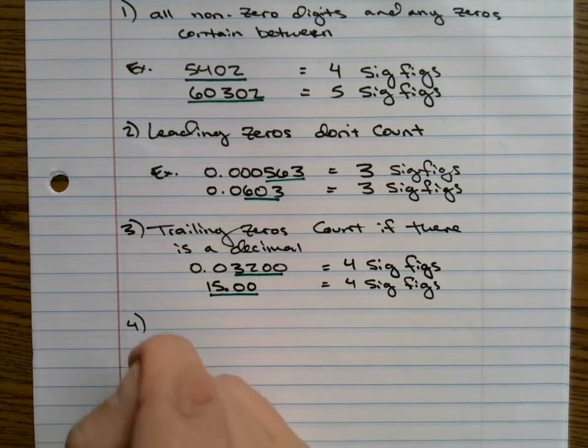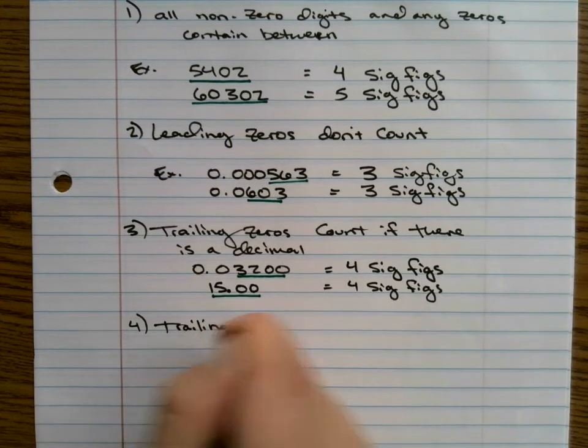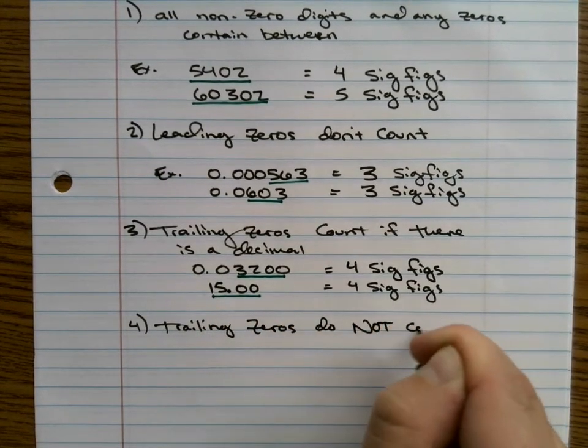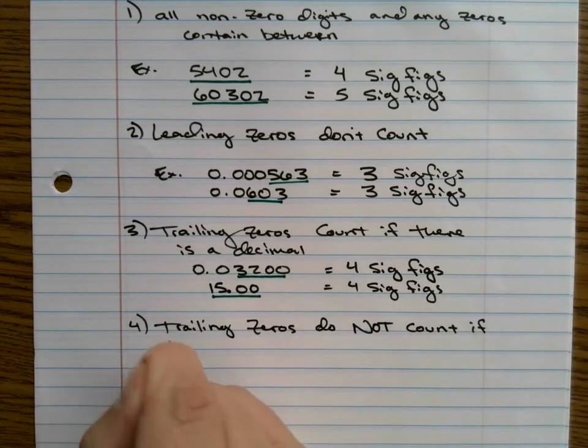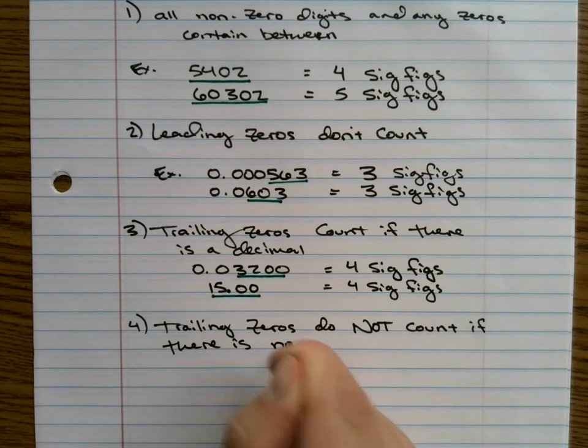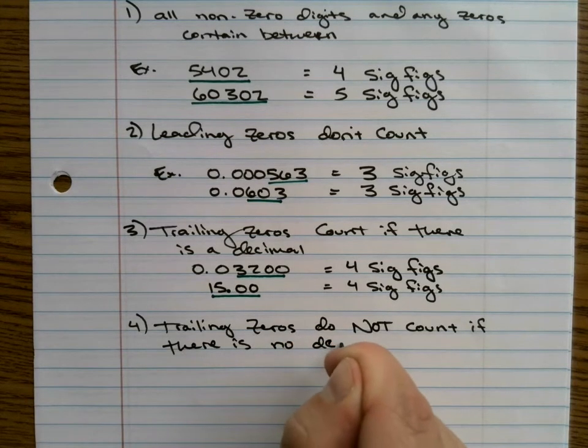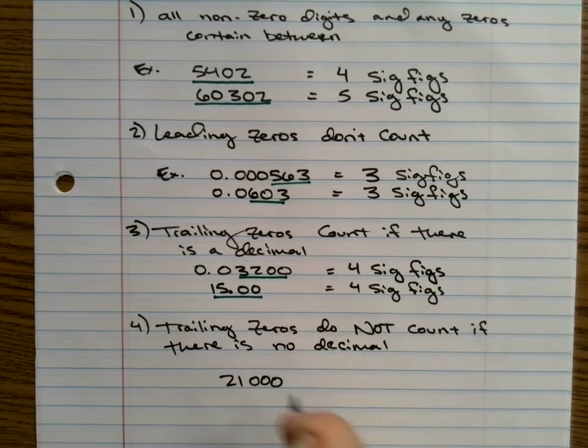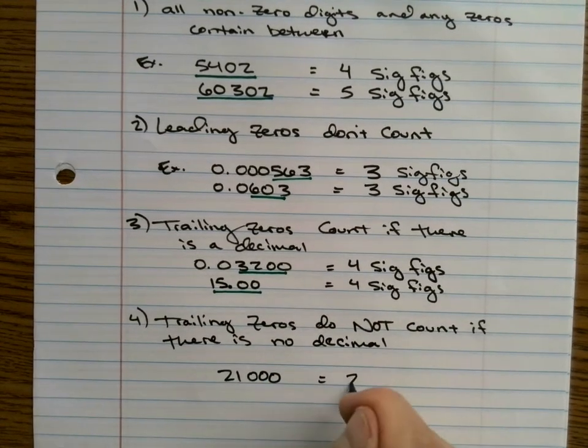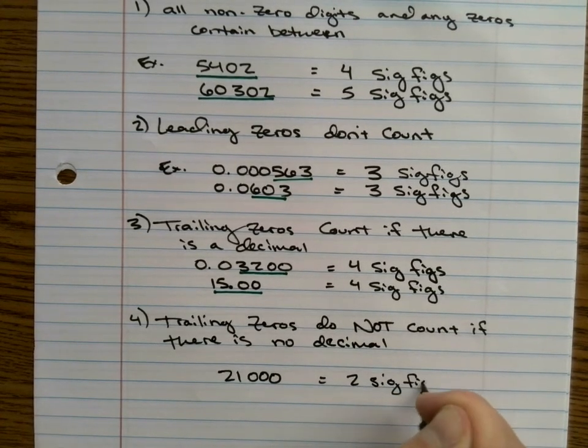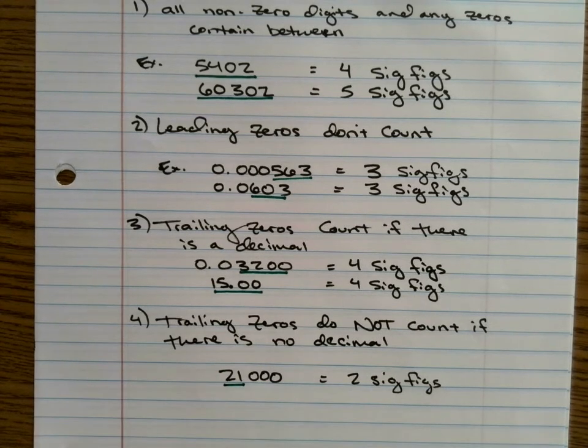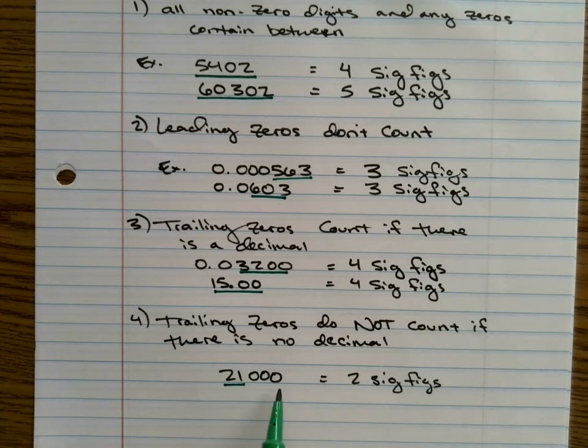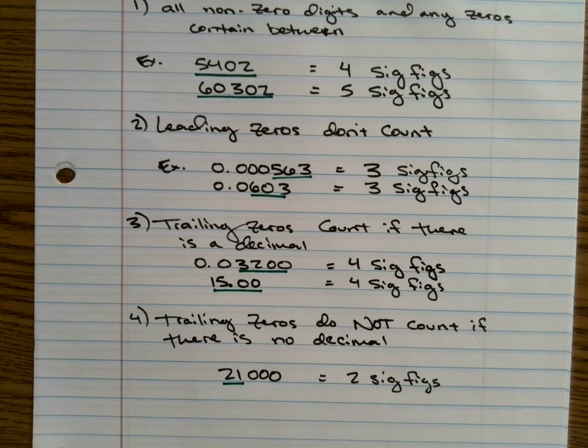But rule number four is trailing zeros do not count if there is no decimal. So, for example, if I had 21,000, there's only two sig figs there. There's only two. Now, if I had a decimal right here, I would have five. But in this measurement, it only goes to here. Let's do one more.